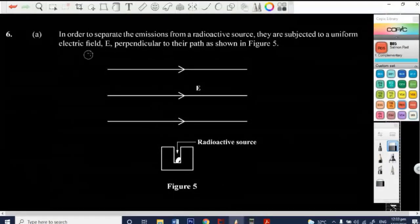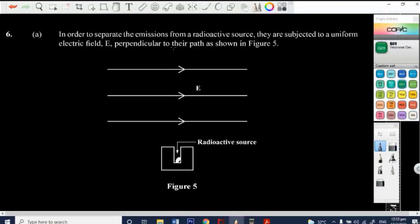So now, they say that in order to separate the emissions from a radioactive source, they are subjected to a uniform electric field, E, perpendicular to their path, as shown in figure three.